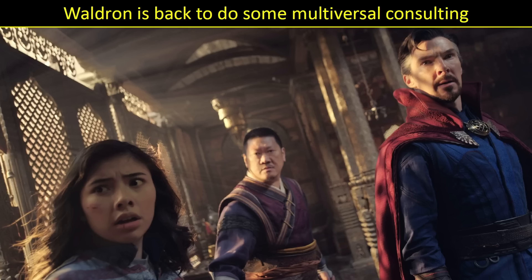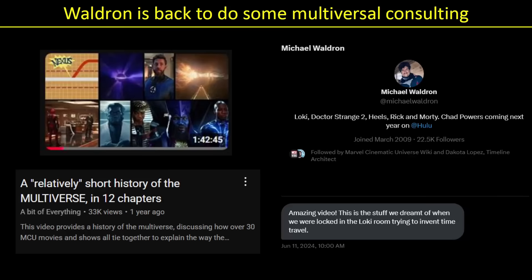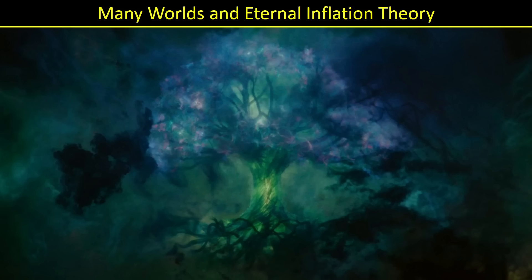I did a video called 'A Relatively Short History of the Multiverse' — even though it's an hour and 42 minutes — and I sent a link to it to Michael Waldron. To his credit, he watched it and said, 'Amazing video. This is the stuff we dreamt of when we were locked in the Loki room trying to invent time travel.' I think he's pointing at the fact that my overall theories of how many worlds and eternal inflation fit together were correct. Both theories come together nicely when we look at Loki's tree and how it relates to the rest of the multiverse.